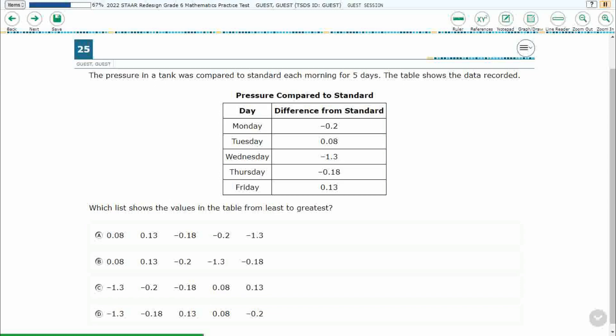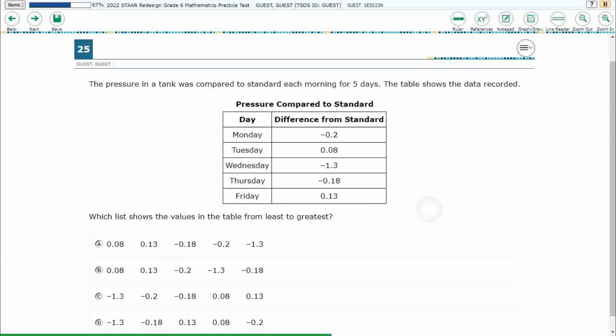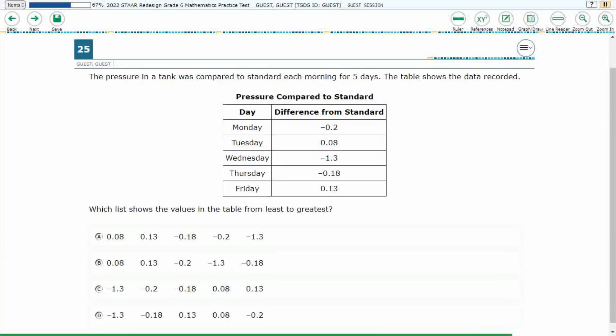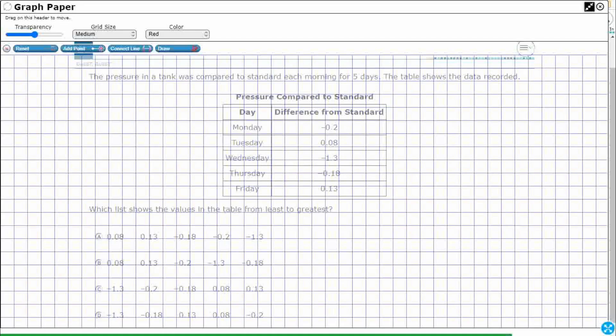So we have pressure in a tank being compared for five days, and we've got all of these values. They are all decimals, and we need to show them in order from least to greatest. Seems like it should be pretty simple.